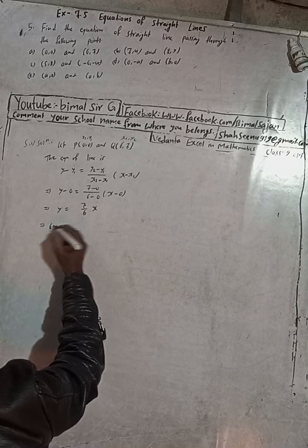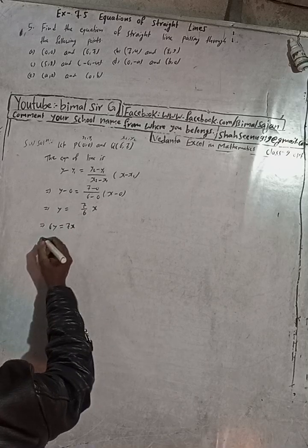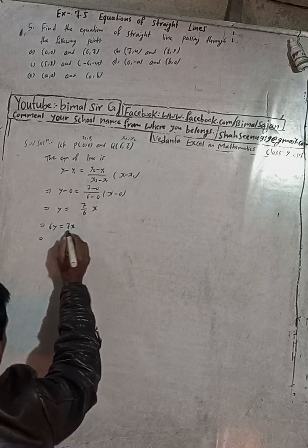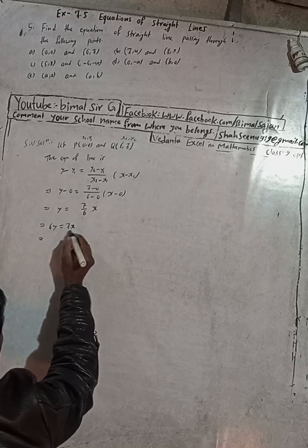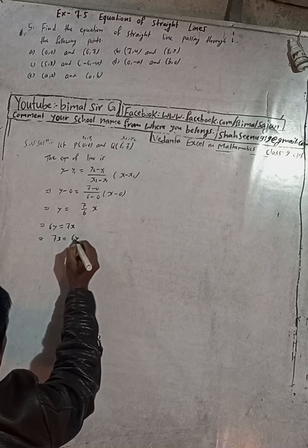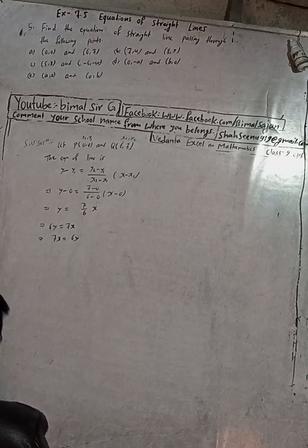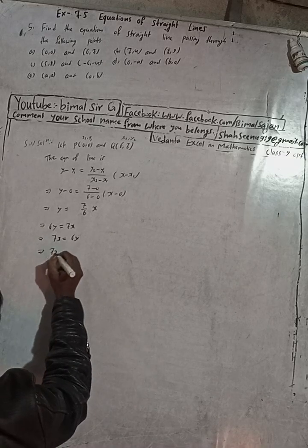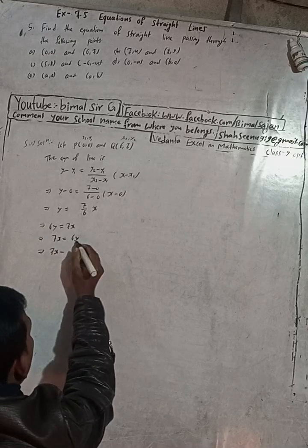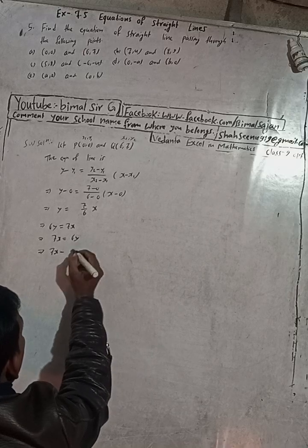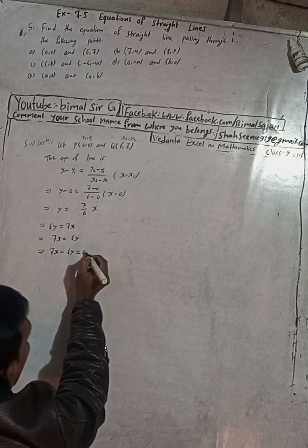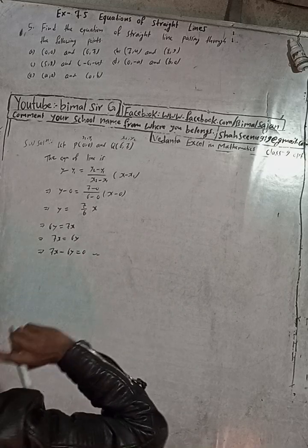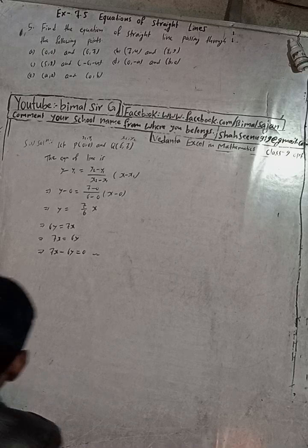So y is equal to 7x over 6. Now rearranging: 6y equals 7x, which gives 7x minus 6y equals 0. This is the required equation for part 5a.